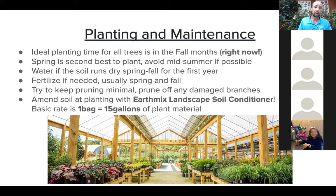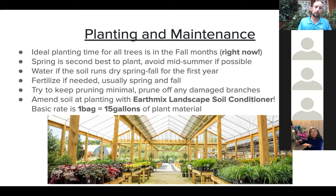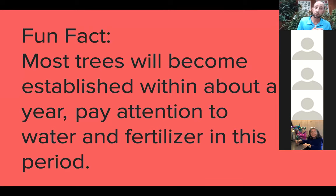Soil amendment is key to success when planting around here. Bates Nursery makes their own earth mix landscape soil conditioner, which goes a long way for amending soil. The basic rate: one bag of landscape mix for about 15 gallons of plant material — so three five-gallon plants or one 15-gallon plant. Mix that 30 to 50% with your existing soil and fill the hole back in. Most trees become established within about a year; use that period to pay attention to water and fertilizer, especially if you have hot or dry weather.